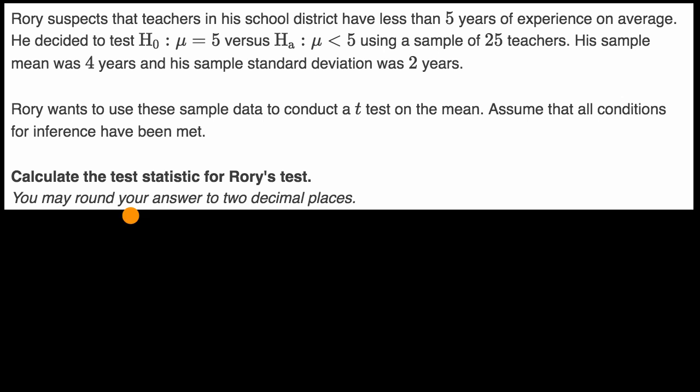I always like to remind ourselves what's going on. You have your null hypothesis here, that the mean number of years of experience for teachers in the district is five, and then the alternative hypothesis is that the mean years of experience is less than five for teachers in the district. So if this represents all the teachers in the district, the population, then what he did is he took a sample, and he used a sample of 25 teachers. So n here is equal to 25.